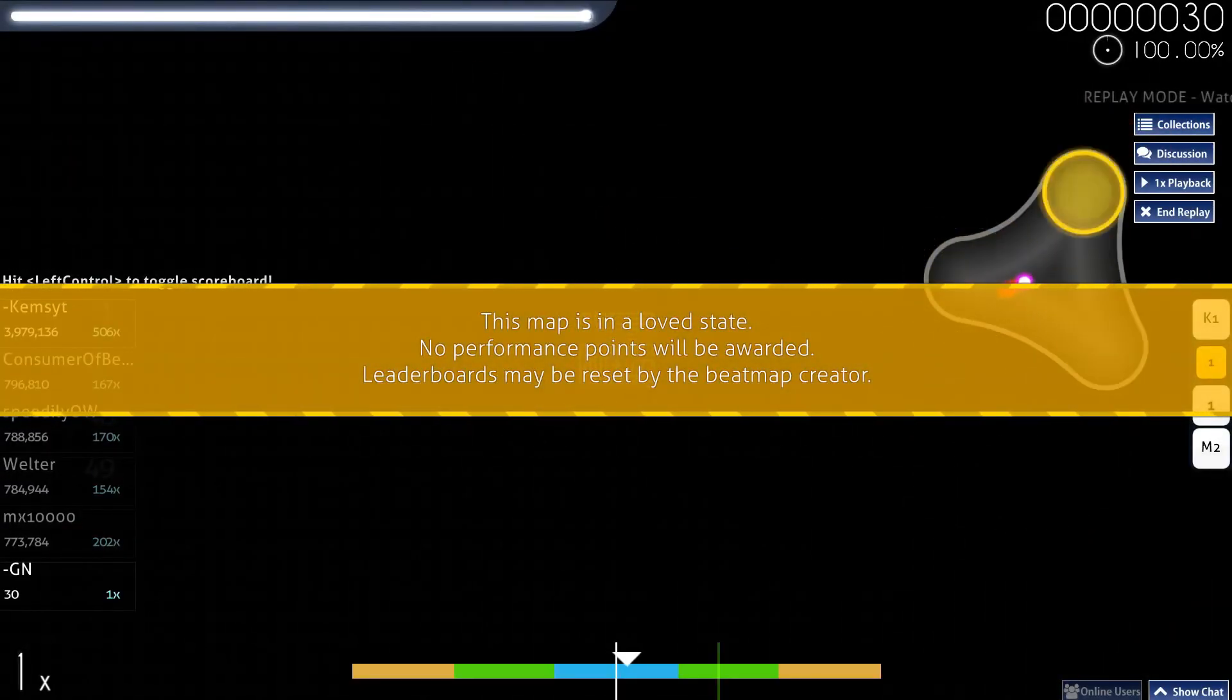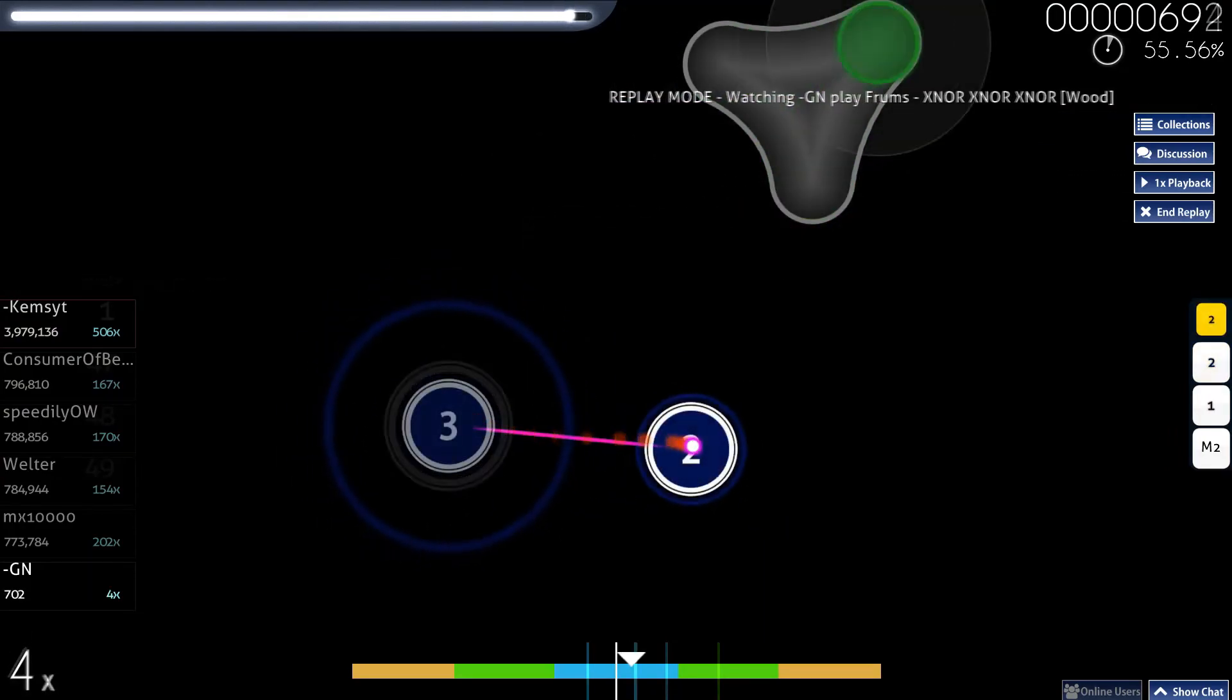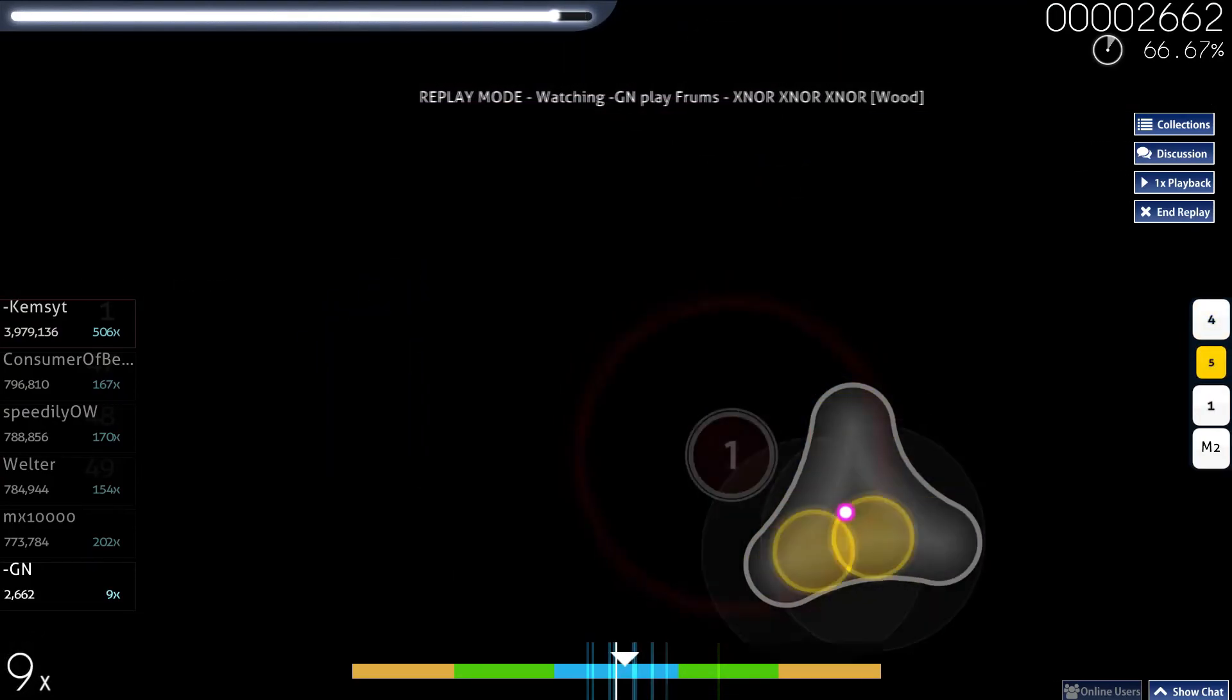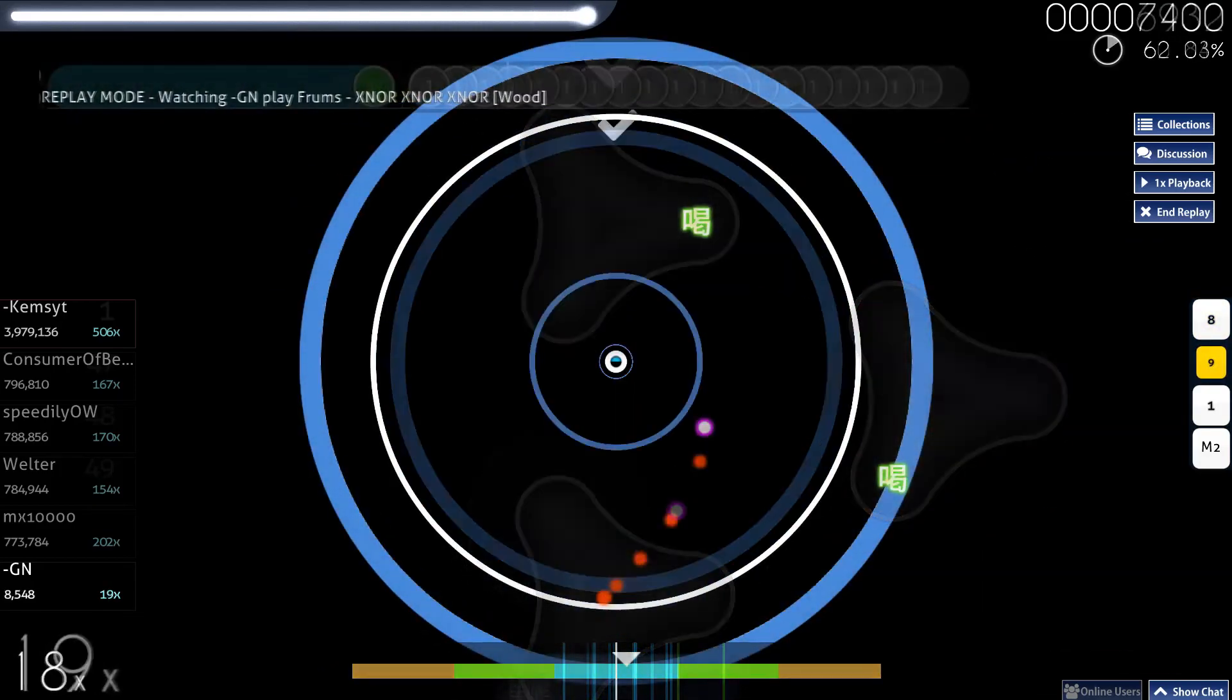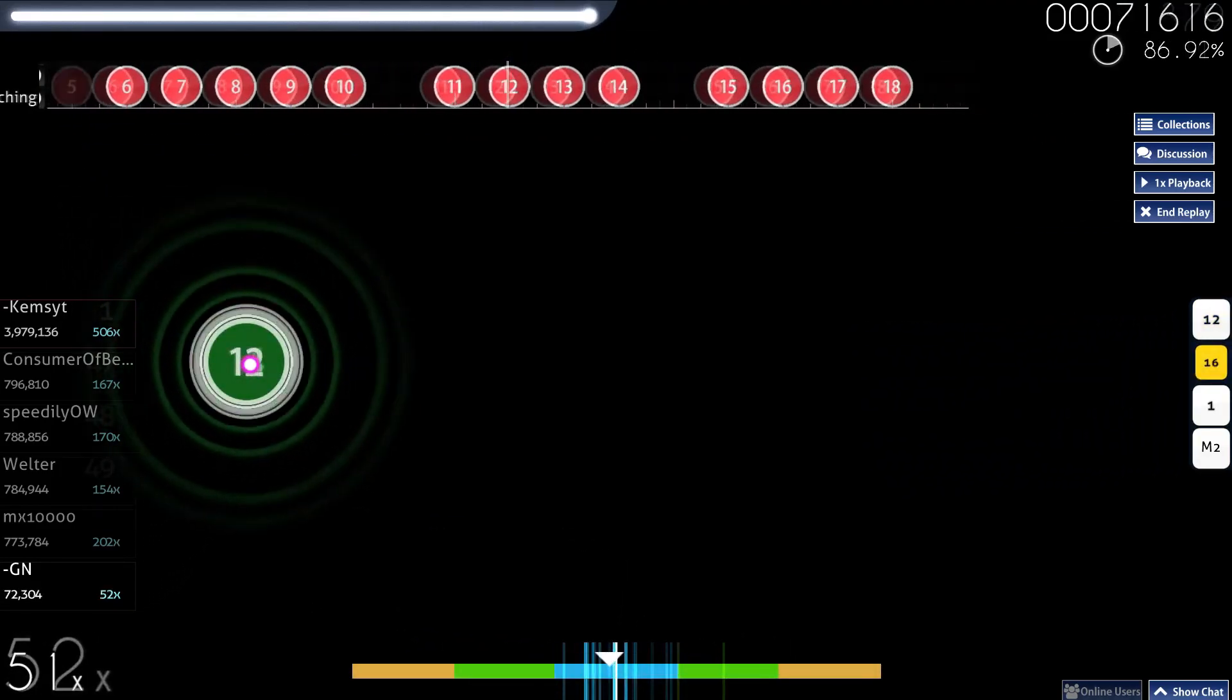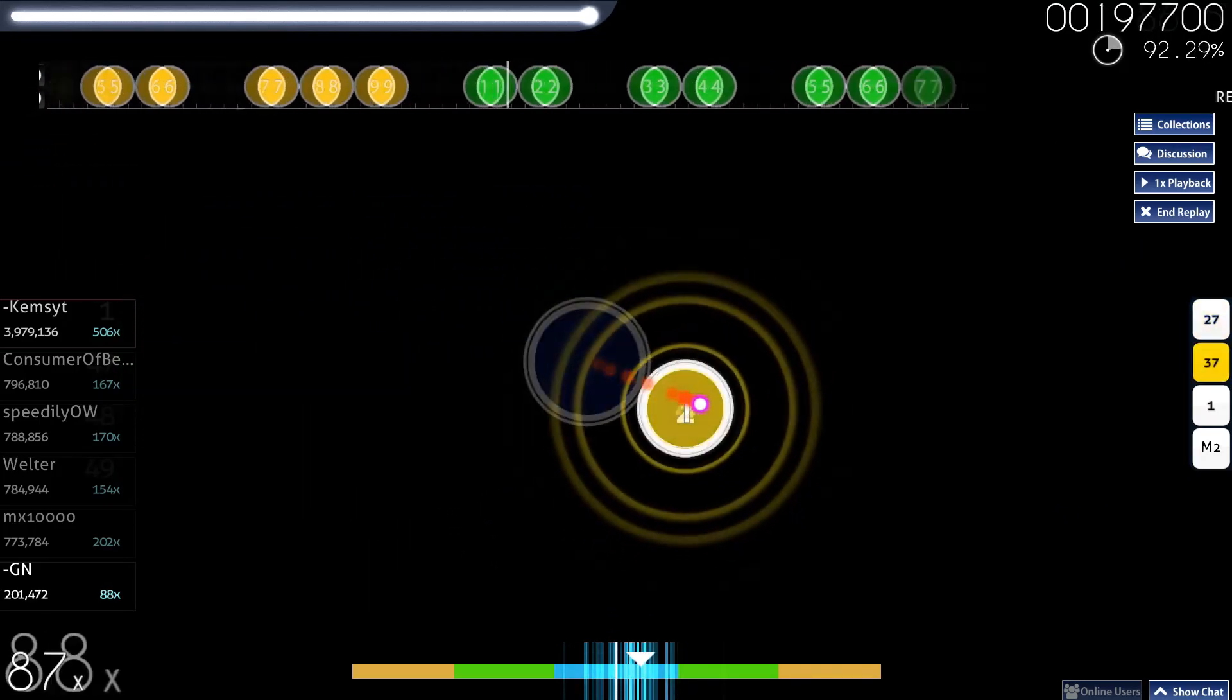This part starts with a bunch of sliders repeating into each other. They aren't a big problem since they end on the blue tick before the next slider starts. The real part starts right after these 3 sliders and the spam of splinters. These mostly utilize basic finger control and reading abilities. These are mapped as stacks, so people unfamiliar with those might have trouble with them.